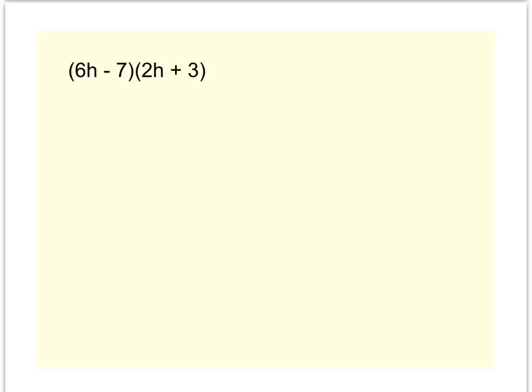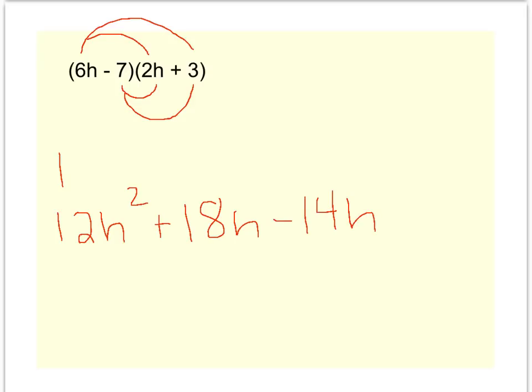Example before we conclude this video. We have multiplying the first, the outside, the inside, and the last. 6h times 2h is 12h squared. 6h times 3 is a plus 18h. A negative 7 times 2h is a negative 14h. And a negative 7 times 3 is a negative 21. So we have a few like terms that we have to combine. I have a negative 14h plus 18h. So I've got a 12h squared. 18 minus 14 is a positive 4h minus 21.